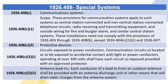1926.408(C) — Communications Systems. 1926.408(C)(1) — Scope. These provisions for communication systems apply to such systems as central station-connected and non-central station-connected telephone circuits, radio receiving and transmitting equipment, and outside wiring for fire and burglar alarm, and similar central station systems. These installations need not comply with the provisions of 1926.403 through 1926.408(B), except 1926.404(C)(1)(2) and 1926.407.